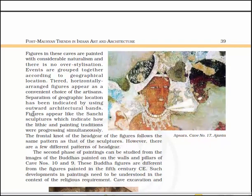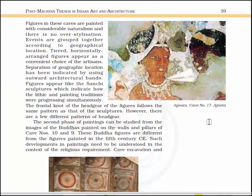Events are grouped together according to geographical locations, and tiered horizontally arranged figures appear as convenient choices of the artisans. Separation of geographic locations is indicated by using outward architectural bands. The figures appear like Sanchi sculptures, indicating how lithic and painting traditions were progressing simultaneously. The frontal knot of the headgear of the figurines follows the same pattern as that of the sculptures. The second piece of painting can be studied from the images of Buddha painted on walls and pillars of cave numbers 10 and 9. These Buddha figures are different from the figures painted in the 5th century CE. Such developments in painting need to be understood in the context of religious requirements.